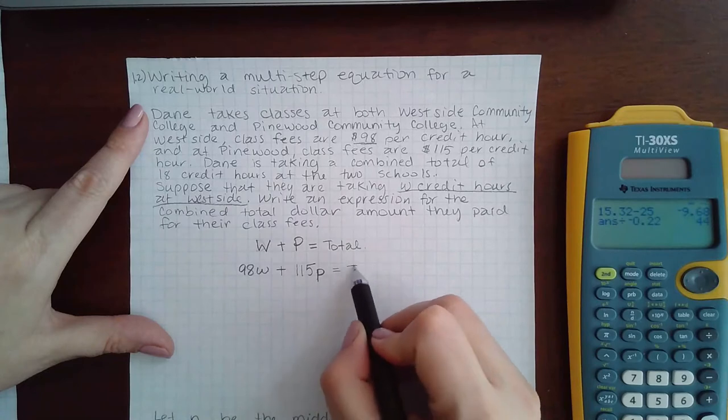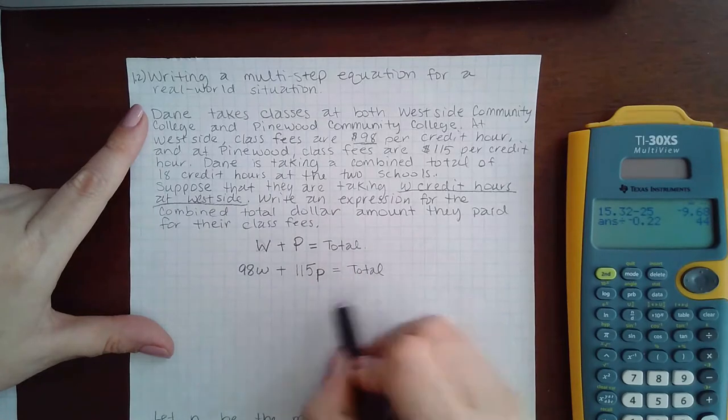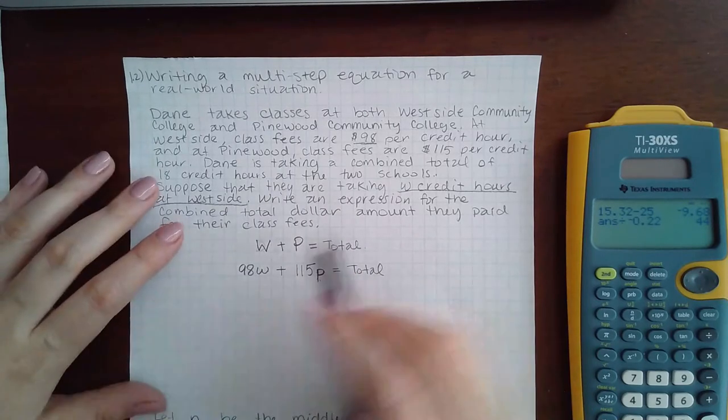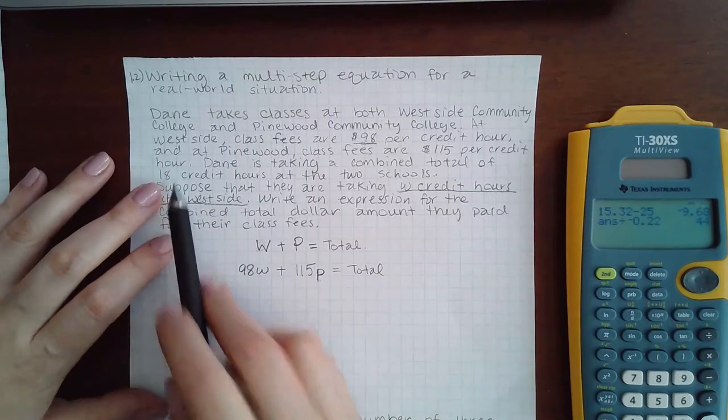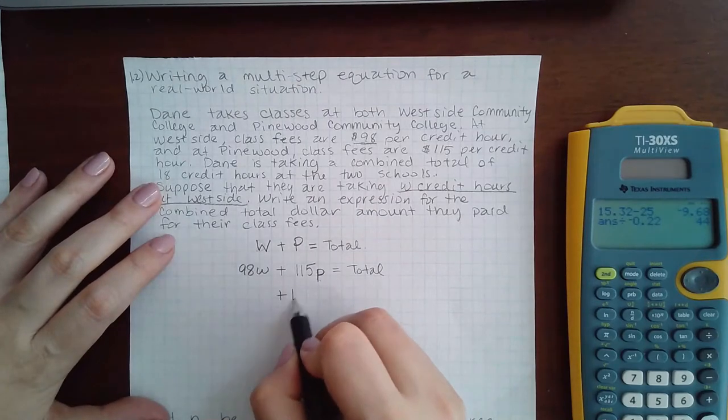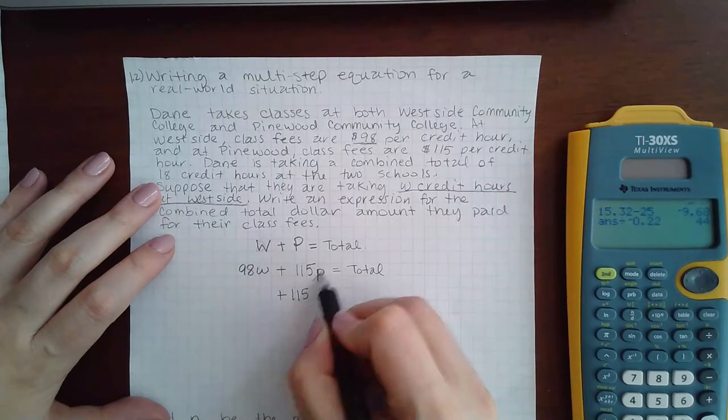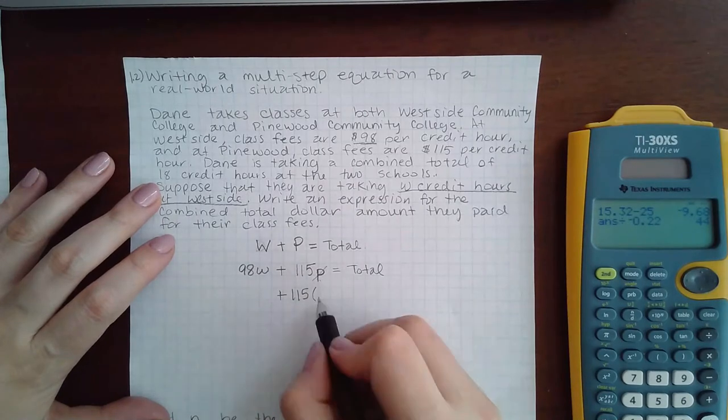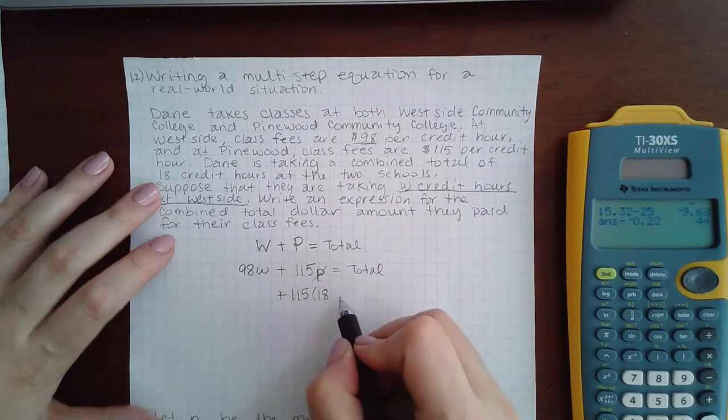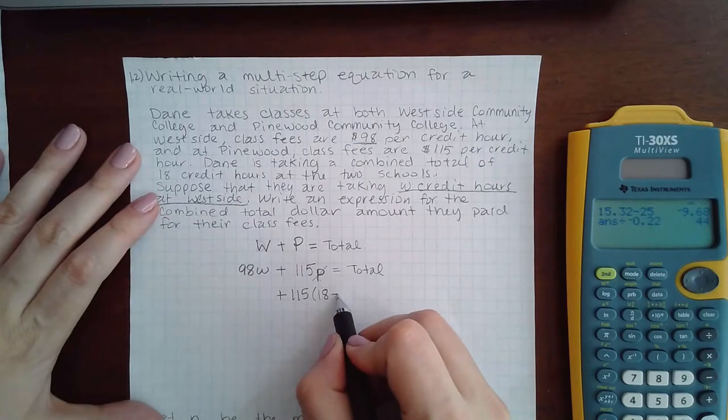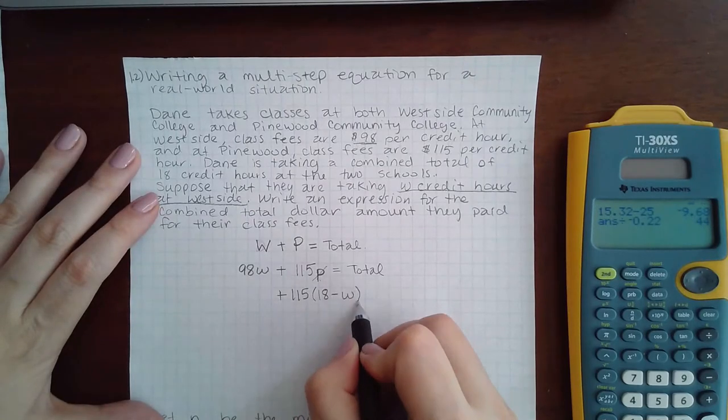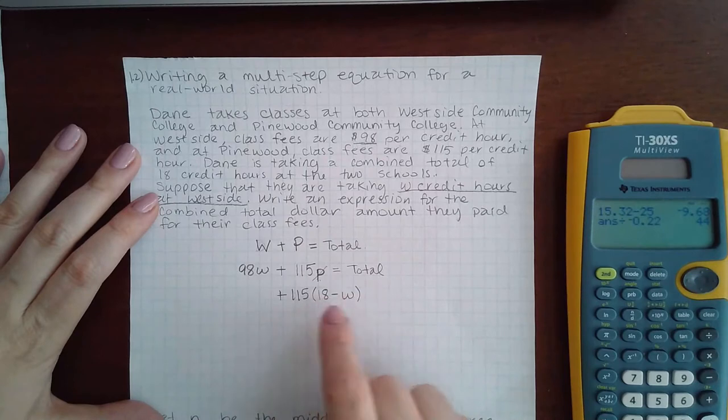However, I don't know how many hours he took at Pinewood. I do know that together he took 18 hours. So what makes sense is instead of using P, we want to say if Dane took 18 hours and I already know how many he took at Westside, all I would do is subtract to find out how many he took at Pinewood.